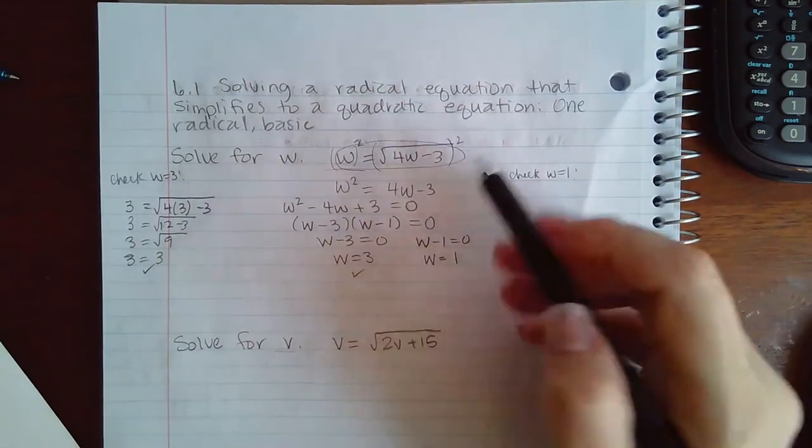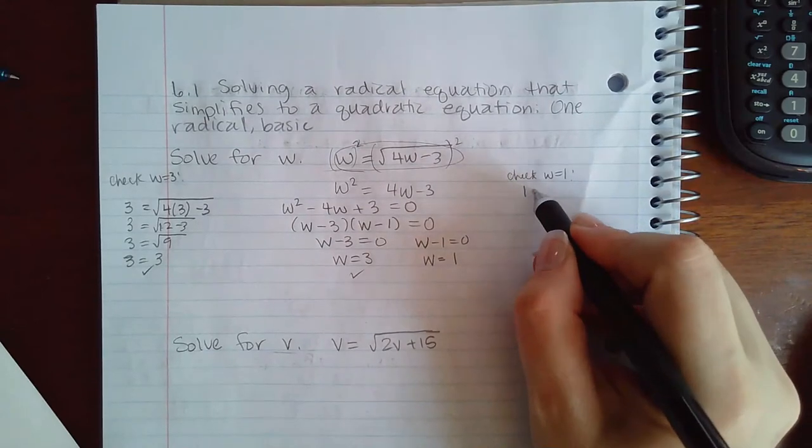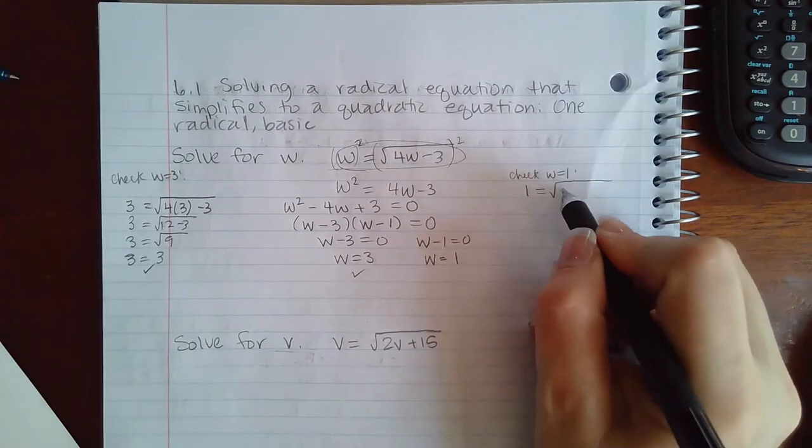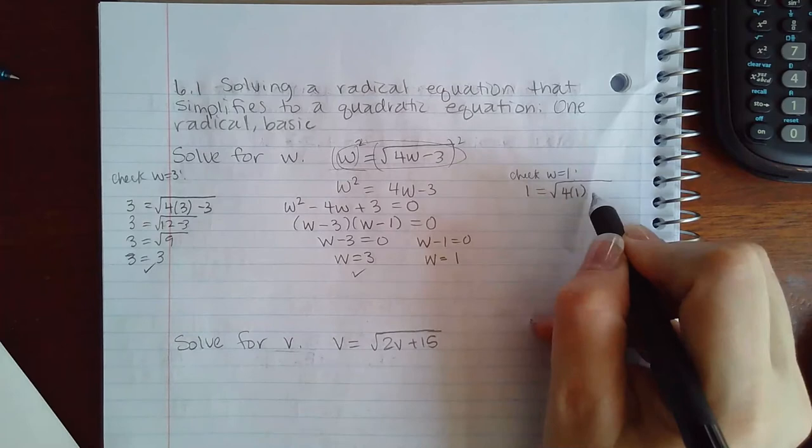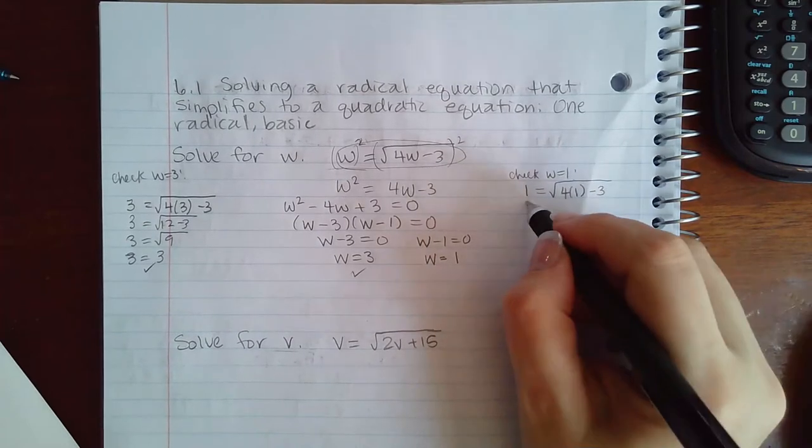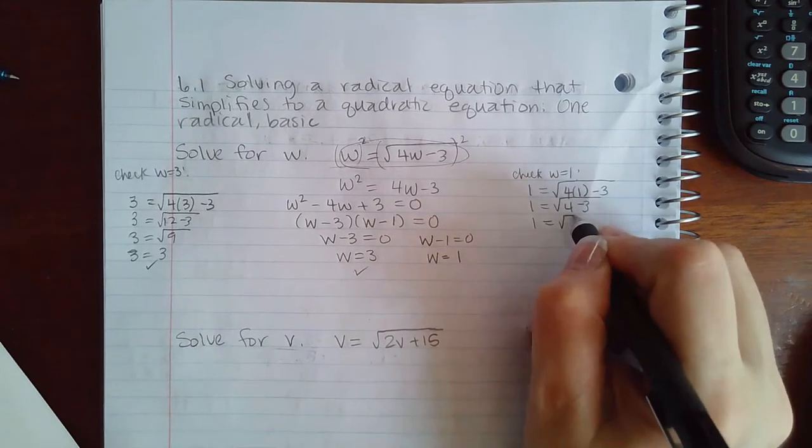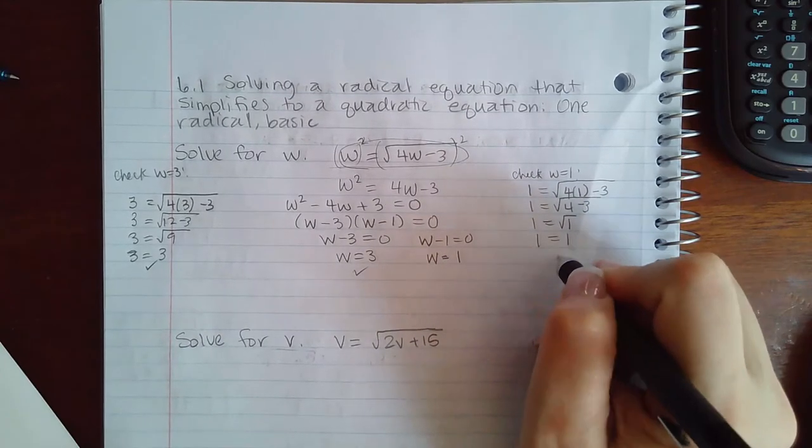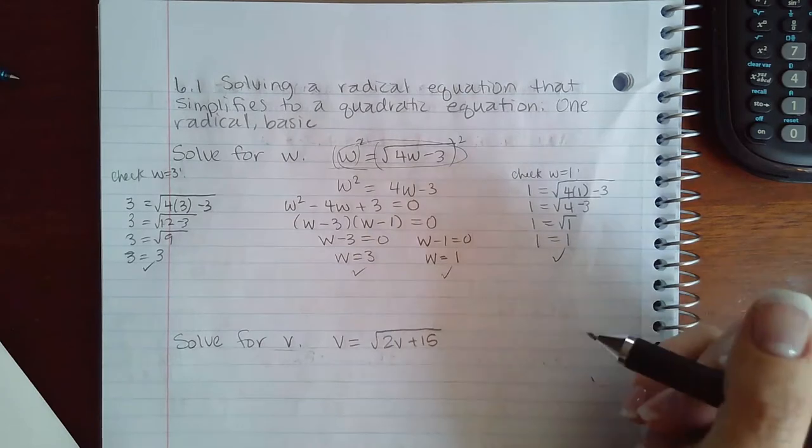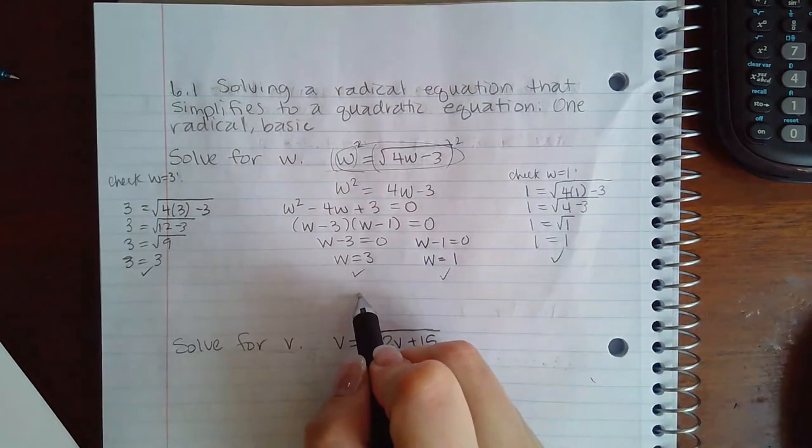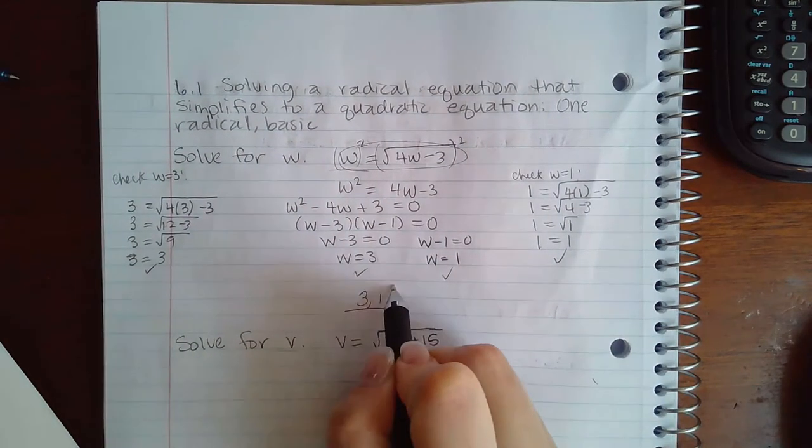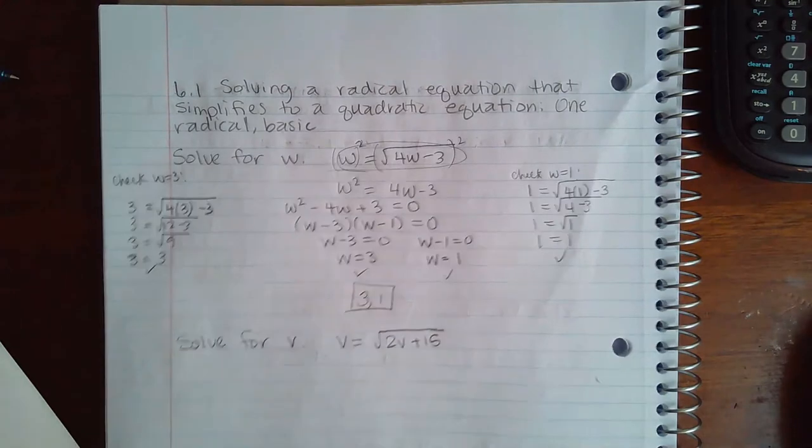Now let's come over here and let's check w equal to 1. So again plugging it into the original, my w value equal to the square root of 4 times my w value minus 3. I get the square root of 4 minus 3 which is the square root of 1, which is 1. So this answer checks out as well, so I have two solutions: 3 and 1.